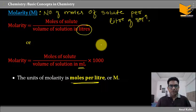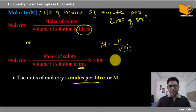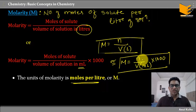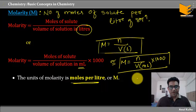So the molarity formula in short: M is equal to N divided by volume in liters. If volume is taken in ml, then M is equal to N divided by V multiplied by 1000. Both equations are the same — just the unit of volume changes. Molarity times volume gives moles.